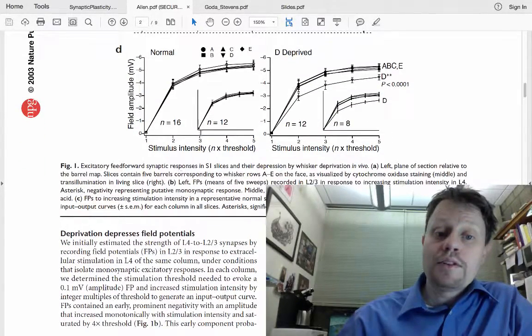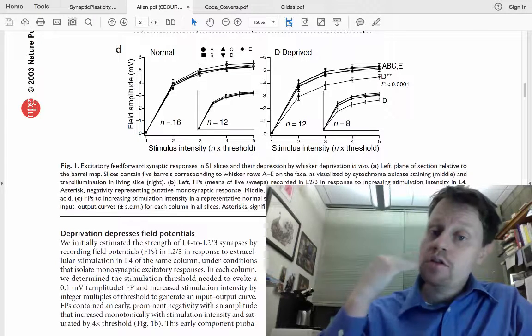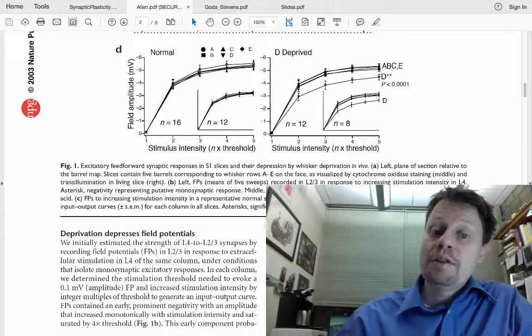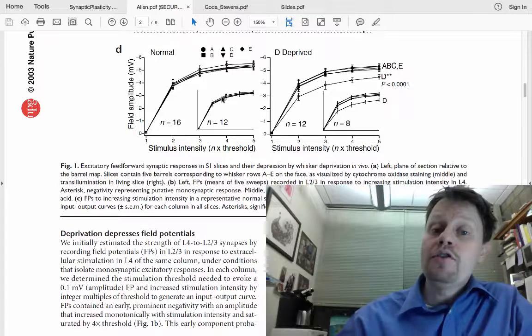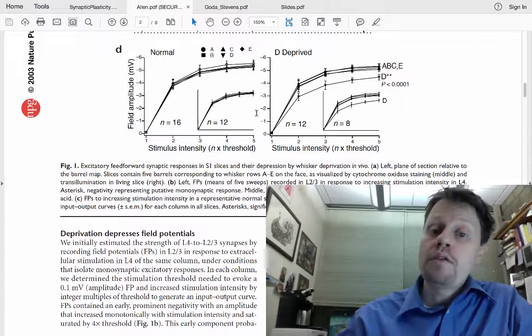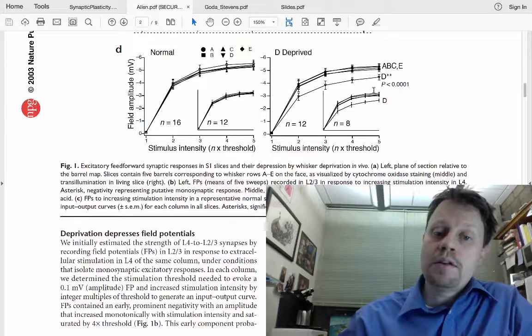One of the things they discovered is that in an animal with normal experience, all five rows of whiskers along its face behave similarly in terms of their synaptic responses. However, if you pluck out just one row of whiskers, that row has weaker synaptic responses.